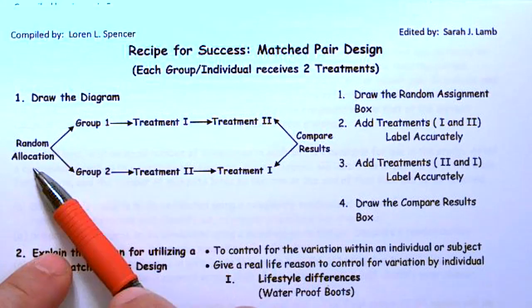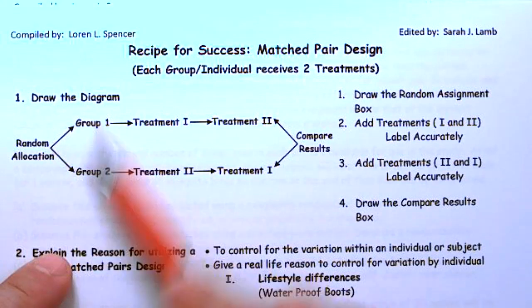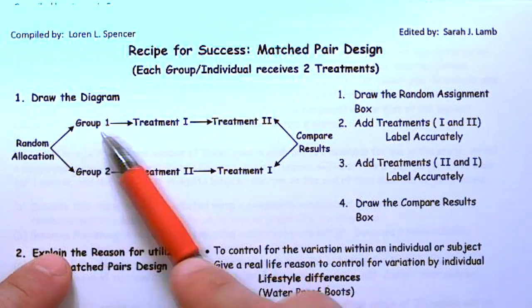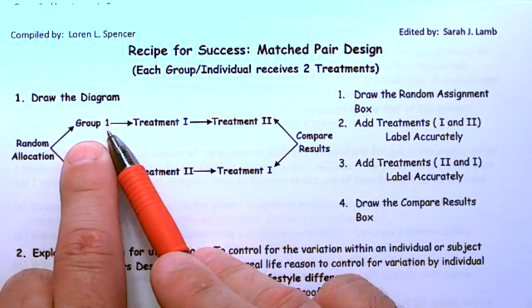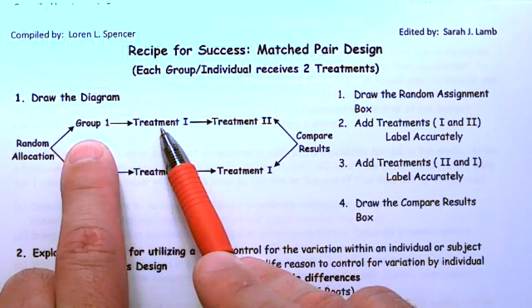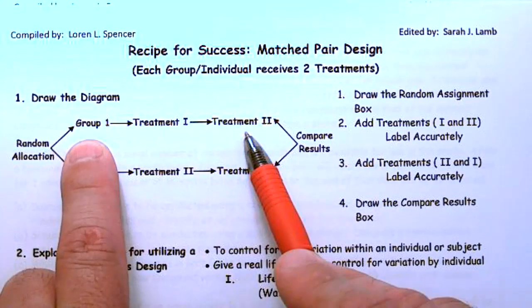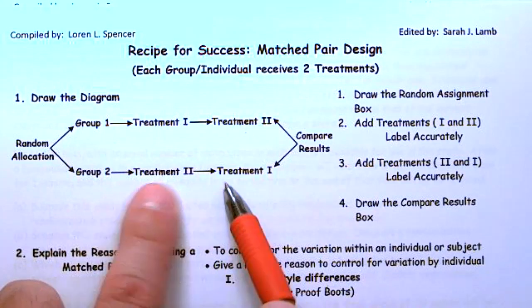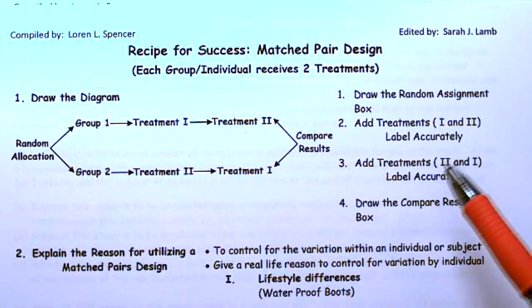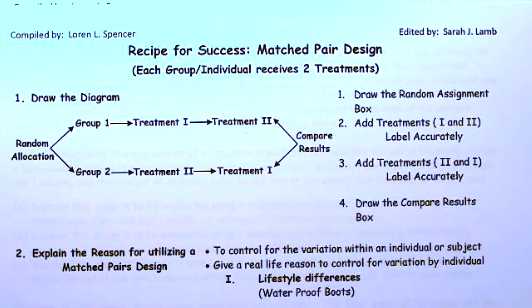In a matched pair design, we randomly assign participants to two treatment groups. One group gets treatment one first, and the other gets treatment two first — this group just gets the reverse order. So all we do is swap the order of the treatments, and at the end we compare results.